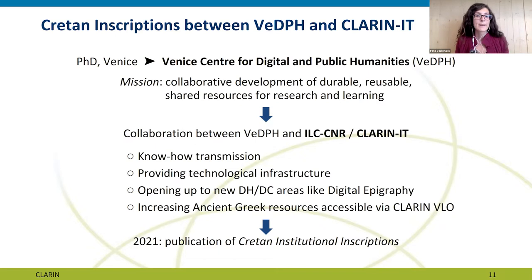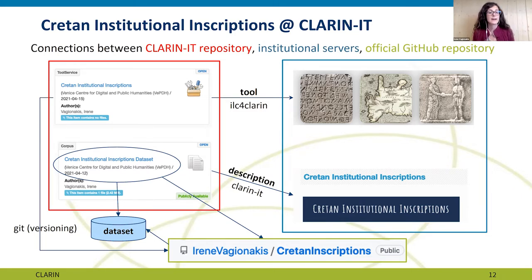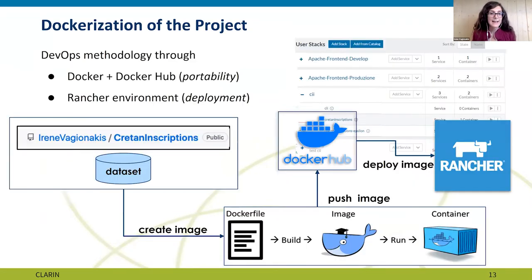The resource is concretely organized as follows: the XML dataset and the customized EFS software code were originally stored in a GitHub repository for versioning. The complete searchable web application is hosted on a server of the ILC for CLARIN B center, whereas the dataset has also been stored on a CLARIN server along with a description of the project and web application.